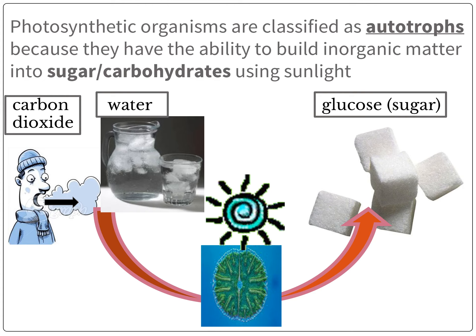Photosynthetic organisms are classified as autotrophs. The root word "auto" meaning self, and "trof" meaning nourishment — so self-nourishment — because they have the ability to build inorganic matter into sugar or carbohydrates using the energy from the sun.